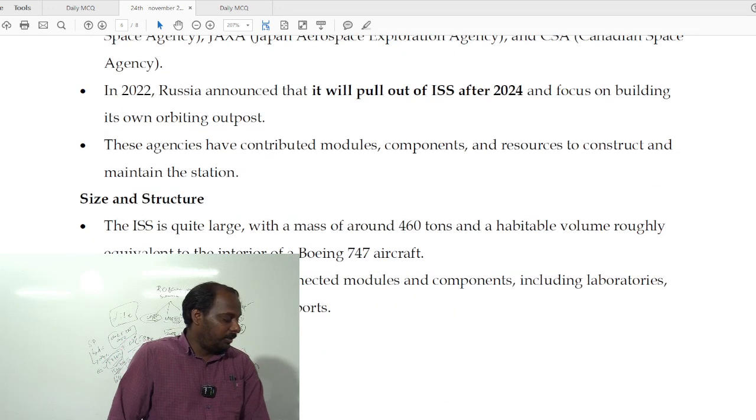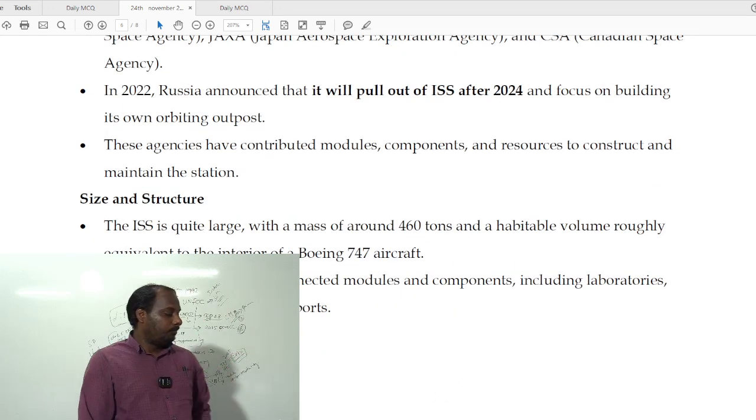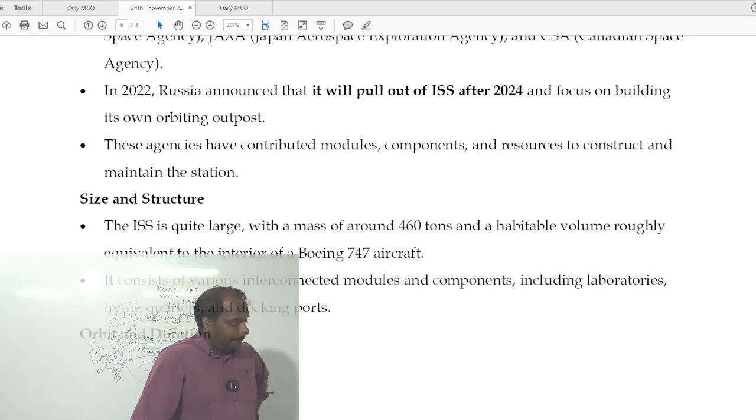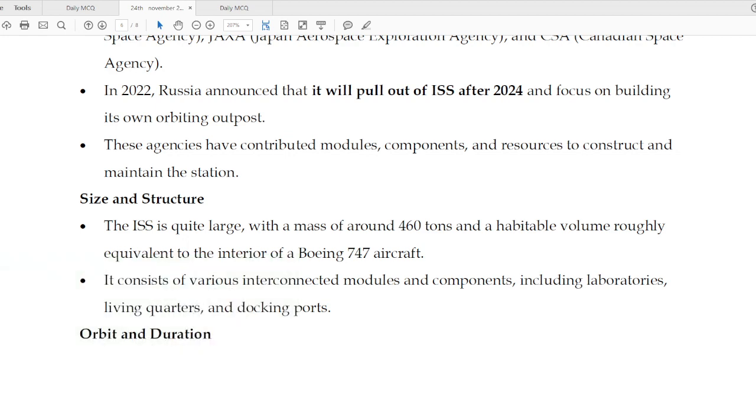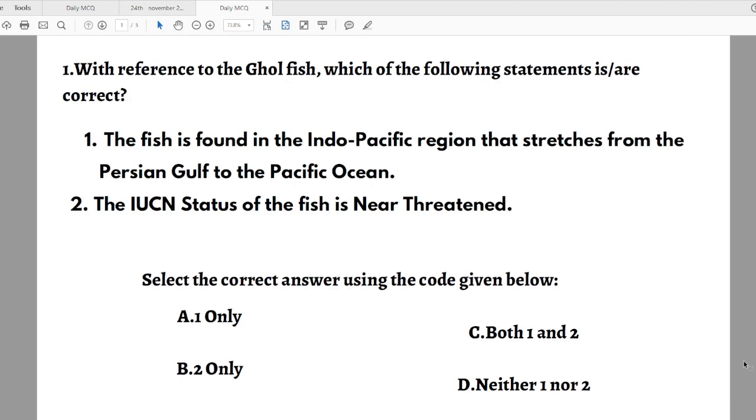Now we will go to the MCQs. Question number one: With reference to the goldfish, which of the following statements are correct? Statement one: The fish is found in the Indo-Pacific region that stretches from Persian Gulf to the Pacific Ocean. Statement two: The IUCN status of the fish is near threatened. Select the correct answer using the code given below. Options are: A - 1 only, B - 2 only, C - both, D - neither.